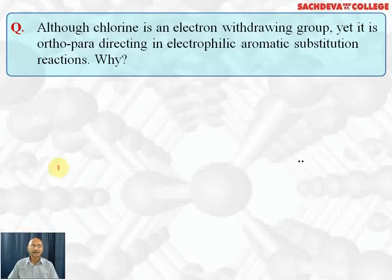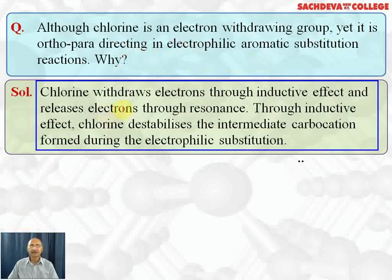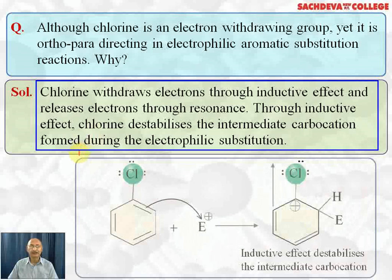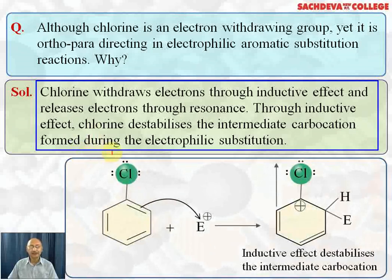Question: Although chlorine is an electron-withdrawing group, yet it is ortho and para directing in electrophilic substitution reactions. Why? Chlorine withdraws electrons through the inductive effect because it is more electronegative than carbon, but releases electrons through resonance because it has lone pairs. Through the inductive effect, chlorine destabilizes the intermediate carbocation, but resonance leads to stabilization, and ultimately the carbocation gets stabilized for electrophilic substitution.